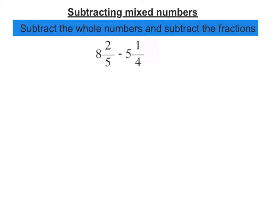Now, subtracting mixed numbers is very much like adding mixed numbers. We subtract the whole numbers, and we subtract the fractions, and then put them together. So for this question here, I'm going to subtract the whole numbers. 8 take away 5 is 3.